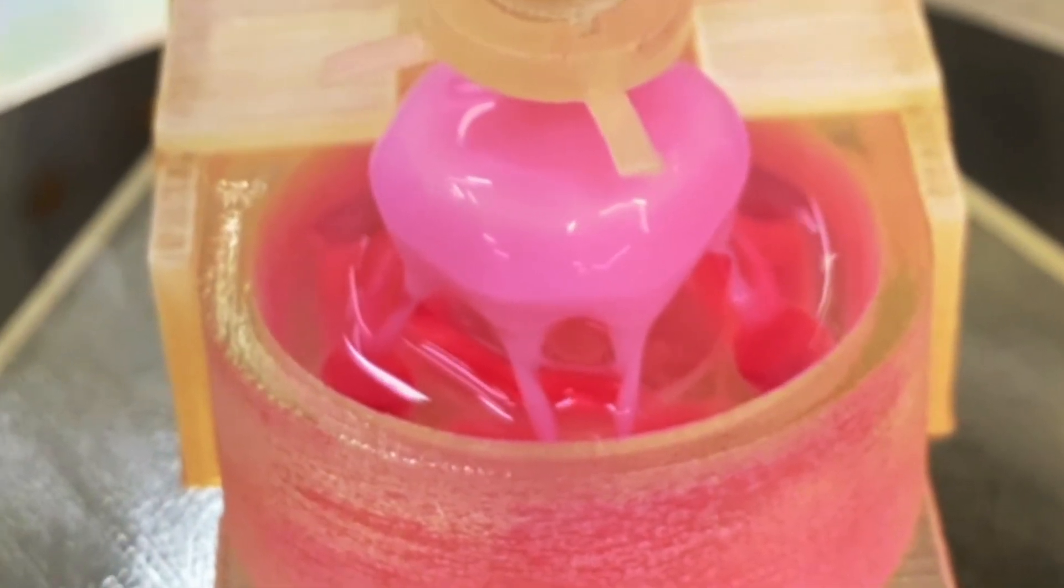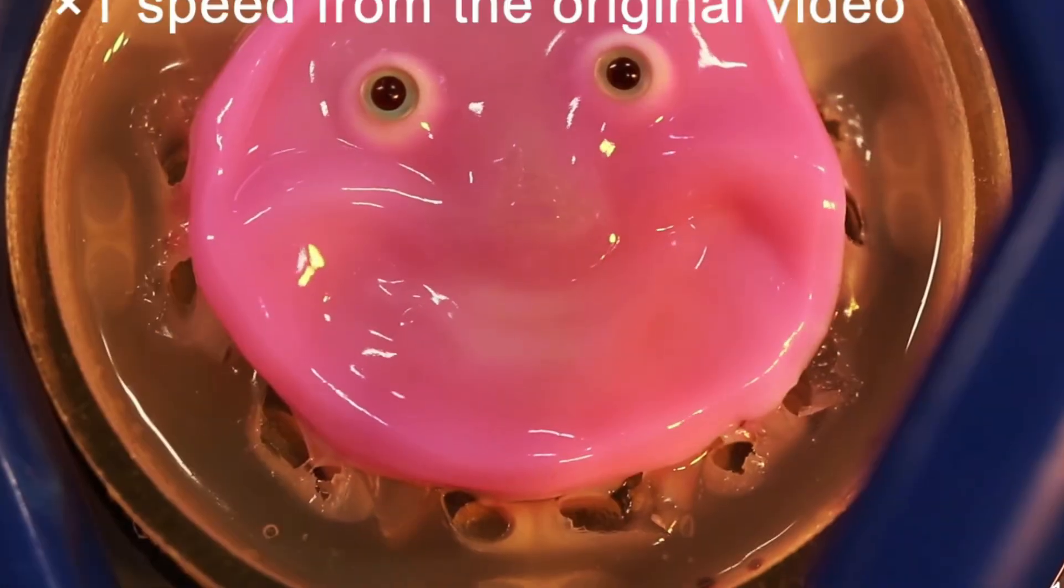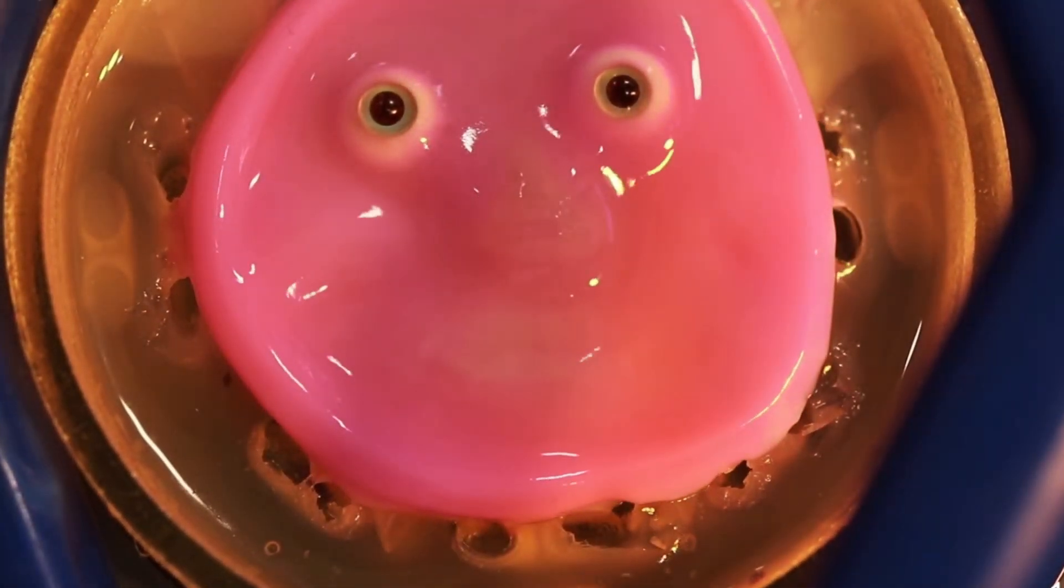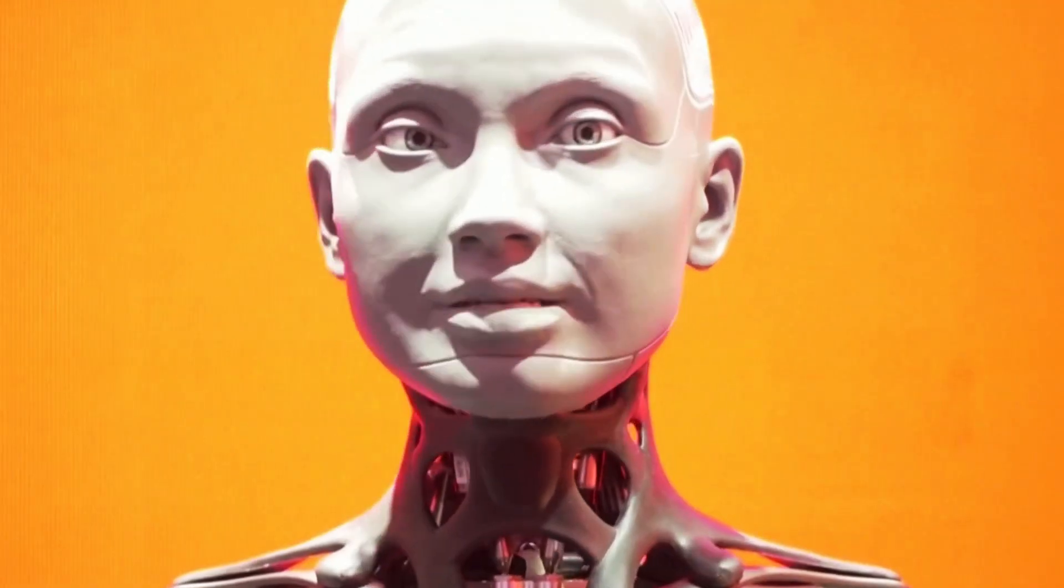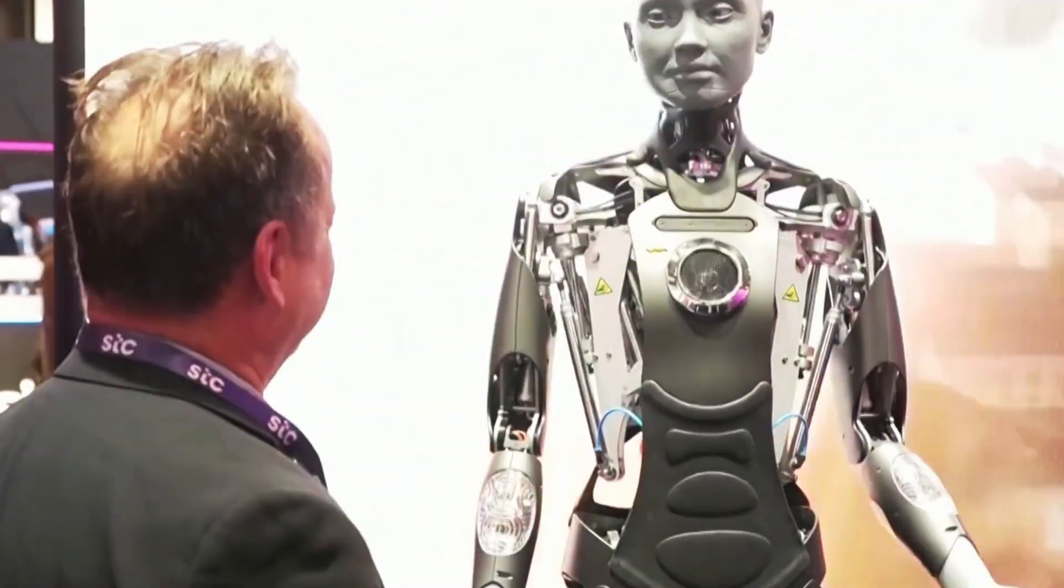But building a robot with living skin isn't without its challenges. One of the biggest hurdles is maintaining the health and longevity of the skin. Unlike human skin, which is constantly nourished by blood vessels, robotic skin needs an alternative way to receive nutrients and oxygen.